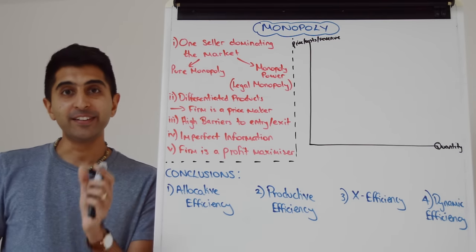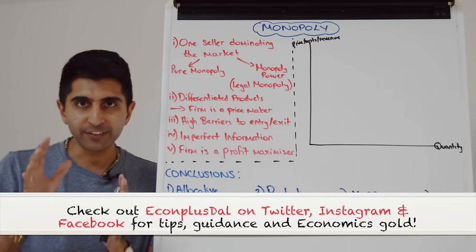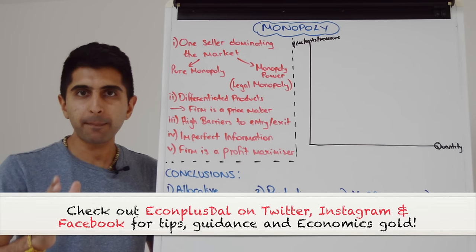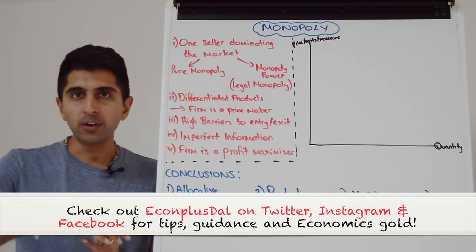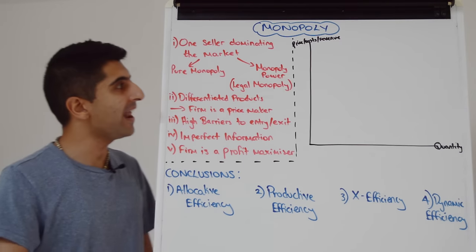Hi everybody, let's in this video consider the market structure of monopoly. We're going to study it in the same way as always, looking at the characteristics first, then the diagram mapping firm behavior, and then we'll analyze and evaluate the market structure using efficiency at the end.